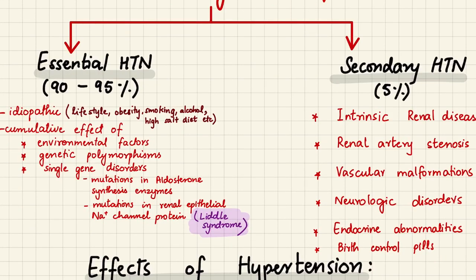Coming to the pathogenesis of hypertension: essential hypertension is the most common type, accounting for 95% of cases, and it is idiopathic. It can be due to lifestyle factors — obesity, smoking, alcohol, high salt diet — and can be a cumulative effect of environmental factors and genetic polymorphism. Single gene disorders include mutations in aldosterone synthesis enzymes causing increased aldosterone and thus increased sodium and water retention. There can also be mutations in renal epithelial sodium channel proteins causing increased sodium reabsorption and increased blood pressure — this is known as Liddle syndrome.